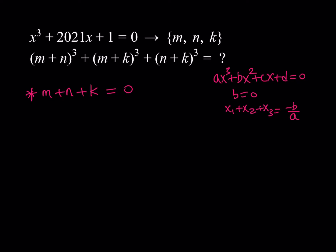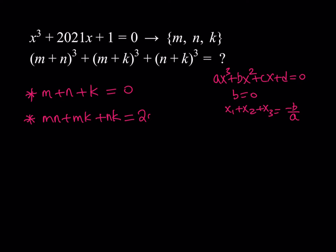So we get the important conclusion: m plus n plus k equals 0. That's going to be our first relationship. The second one is going to be the two-way products: mn + mk + nk. That is c over a, and since a is 1, this is just going to be 2021. And the product mnk, which is negative d over a, is going to be negative 1.